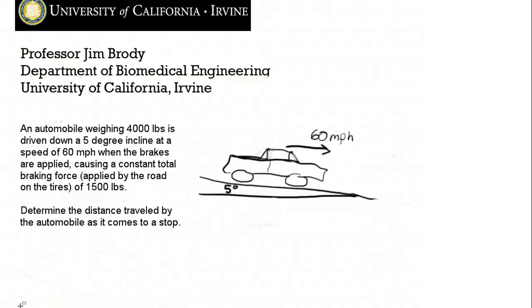We're solving this problem. An automobile weighing 4,000 pounds is driven down a five-degree incline at a speed of 60 miles per hour. When the brakes are applied, causing a constant total braking force applied by the road on the tires of 1,500 pounds, determine the distance traveled by the automobile as it comes to a stop.